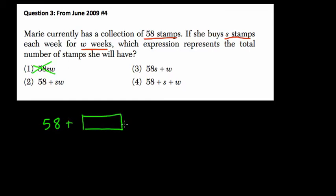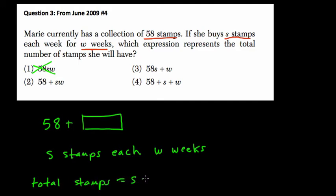So by the second sentence, if she buys S stamps each week for W weeks, that means every week she's going to buy S stamps for as long as W is. And so the total number of stamps that she's buying will just simply be W times S. Right. Total stamps is S times W. And I'm going to just build on that for a second.